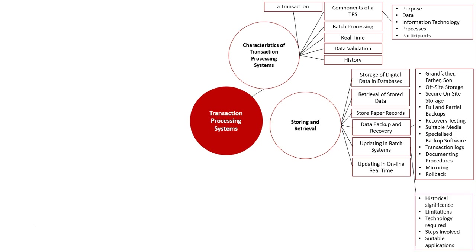For updating in batch systems, we need to know the historical significance of batch systems — how they were among the first information systems and led to many other developments. We also need to know their limitations, the technology required to do updating in batch systems, the steps involved, and what are suitable applications for doing so.